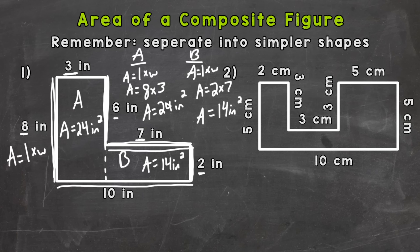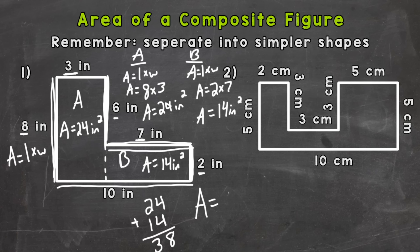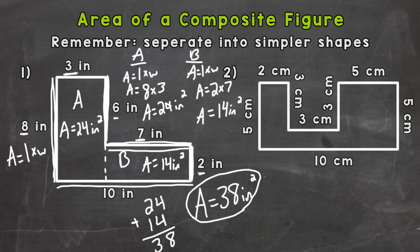Now that we have the area of the left rectangle and the right rectangle, we add those together in order to get the area of the whole shape. So we do 24 plus 14, and that gives us an answer of 38. So our final area is 38 square inches. We separated into simpler shapes, found those areas, and added them together for the area of the whole composite figure.